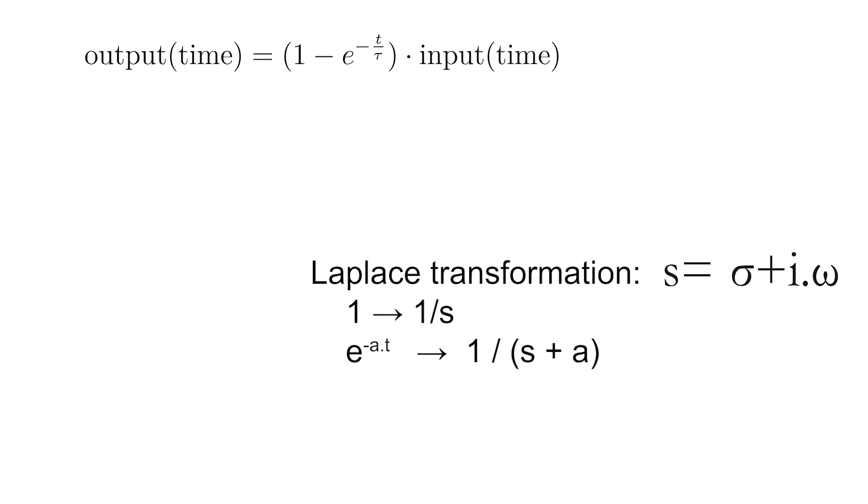One of the properties of the Laplace transform is that one in the time domain becomes 1 divided by s in the frequency domain, and that an exponential becomes 1 divided by s, added with the argument of the exponential. Using these properties, you can easily transform the transfer function to the frequency domain.